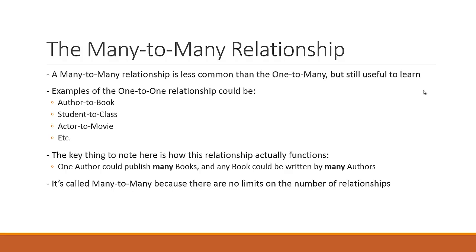Think about it this way: one author could publish many books, and any one of those books could be written by any number of authors. It's called a many-to-many relationship because there are no limits to the number of relationships that can be formed between these two tables.